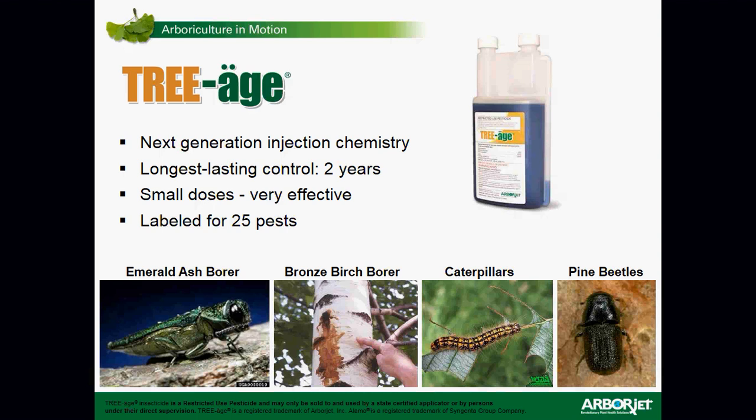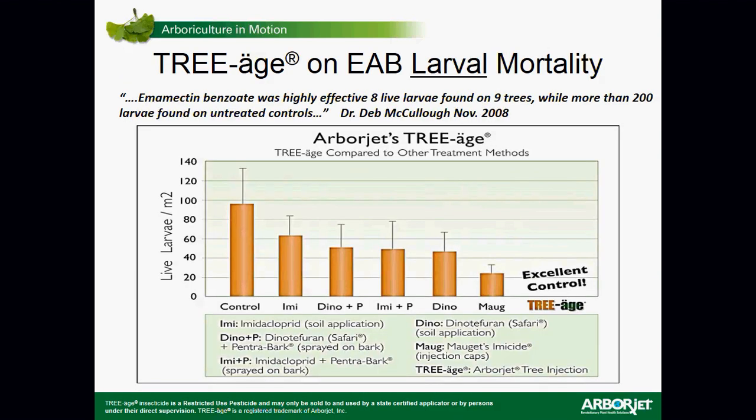The material for Emerald Ash Borer control is TREE-äge, which has been around for more than 10 years. It is a two-year treatment. The active ingredient is emamectin benzoate at 4% active ingredient, and it's labeled for other pests but very, very effective against Emerald Ash Borer — EAB has a high sensitivity to this material. It's in the abamectin class of insecticides — non-neonicotinoid — and it is only for trunk injection. Research indicates excellent control, and hundreds of communities and thousands of arborists have been using it with proven success.